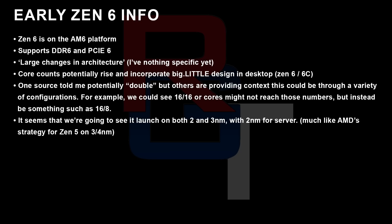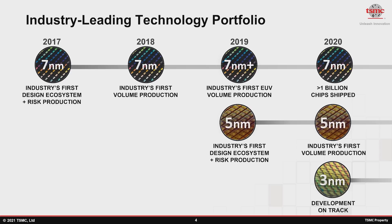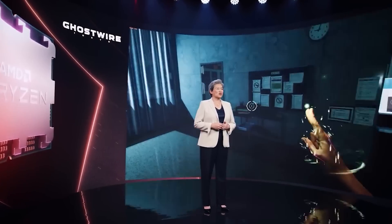Core counts could potentially rise, and it gets a little different because allegedly in the desktop we could see big.little. A source told me core counts could potentially double — but providing context from numerous other sources, it seems this could be a 16/16 or something more like a 16/8 configuration. AMD haven't decided the specifics at this stage. One thing I have been told is it's likely going to launch on both 2nm and 3nm, with 2nm for server and high-end mobile, and 3nm more likely for desktop — similar to how Zen 5 uses 3nm for server and 4nm for desktop.